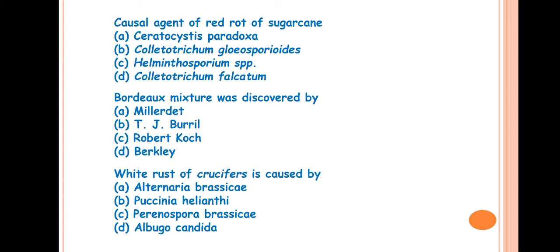The first question is, causal agent of red rot of sugarcane is? The answer is D, Colletotrichum falcatum. Ceratocystis paradoxa causes the pineapple disease of sugarcane. Colletotrichum gloeosporioides causes anthracnose of mango. Helminthosporium species causes spots. Helminthosporium oryzae causes brown spot of rice. It was first reported from Java by Went in 1893.